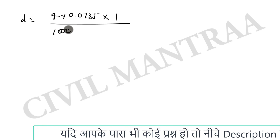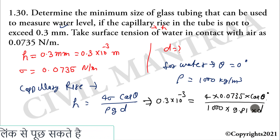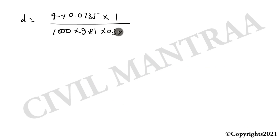d की value निकालते हैं: d = 4 × 0.0735 × 1 / (1000 × 9.81 × 0.3 × 10⁻³)। यह solve करने पर d = 0.1 meter आता है।